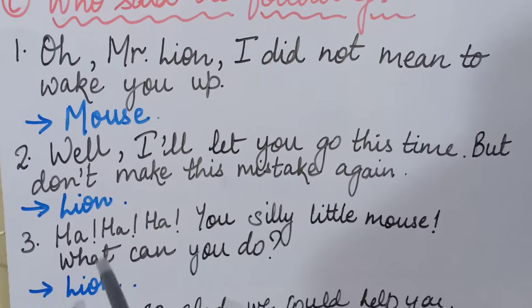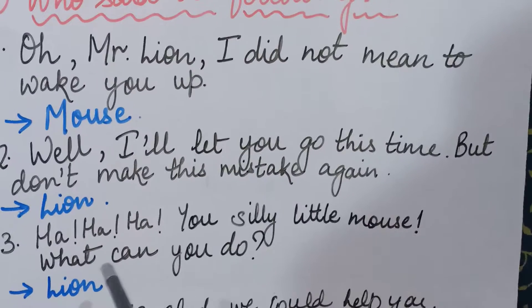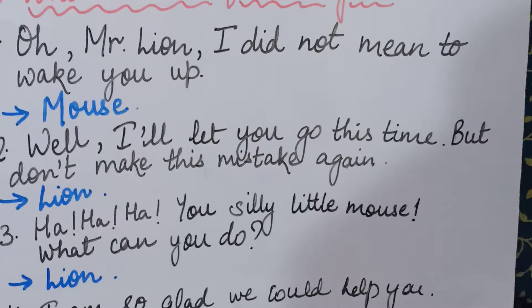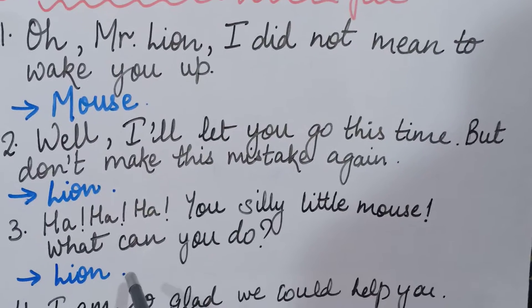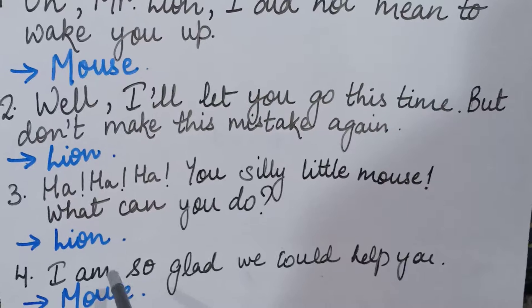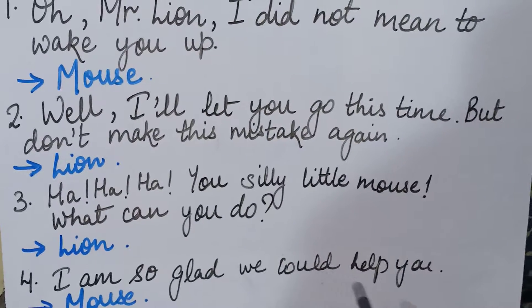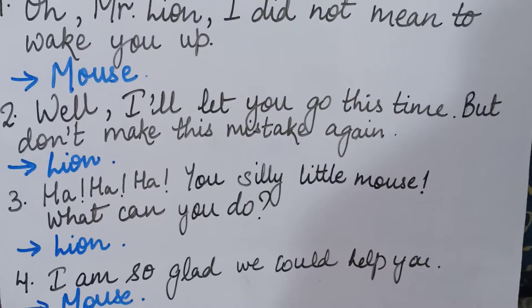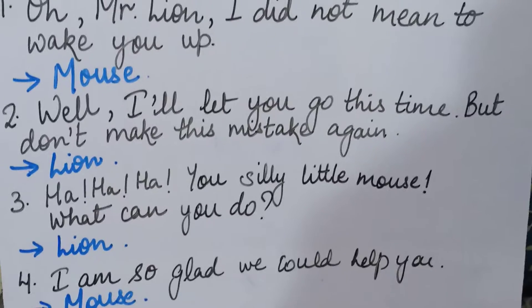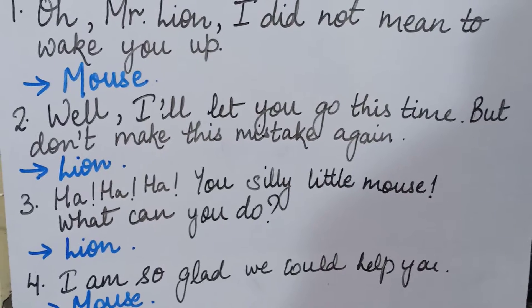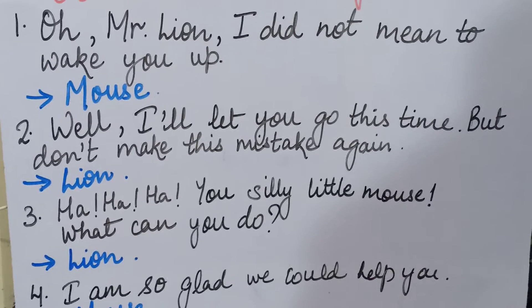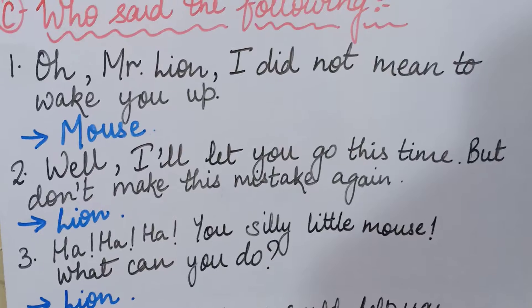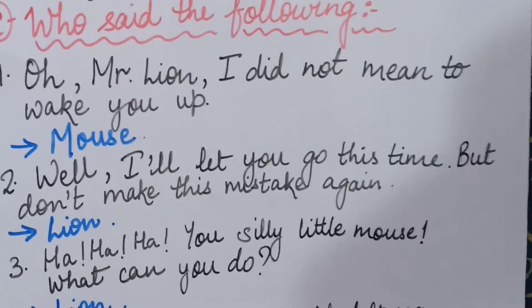Now the third sentence: 'Ha ha ha! You silly little mouse, what can you do?' This was said by the lion. L-I-O-N — lion. Now the last, fourth sentence: 'I am so glad we could help you.' This means the mouse was very happy that it had helped the lion. So this was said by the mouse. M-O-U-S-E — mouse. I hope you all have understood all four sentences.